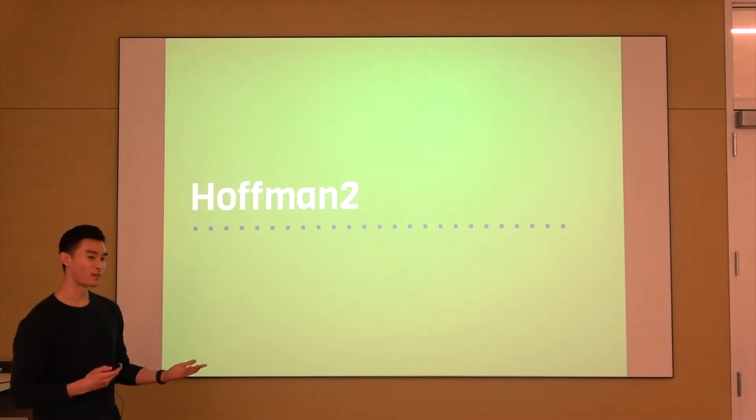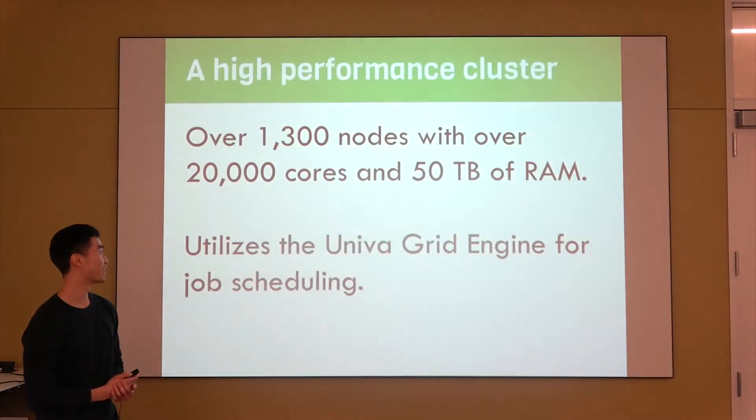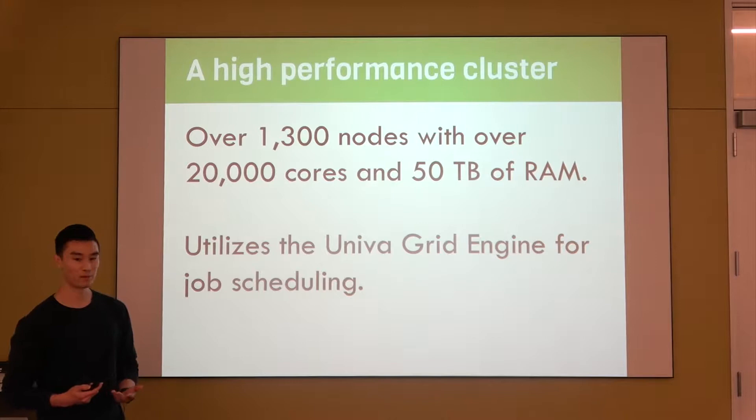So just an overview of what Hoffman is. It's over 1,300 nodes—a node is like a computer—and these collectively have over 20,000 cores and 50 terabytes of RAM. Just for reference, your laptop probably has 2 to 4 cores and 8 to 16 gigs of RAM, so it's a lot of resources.